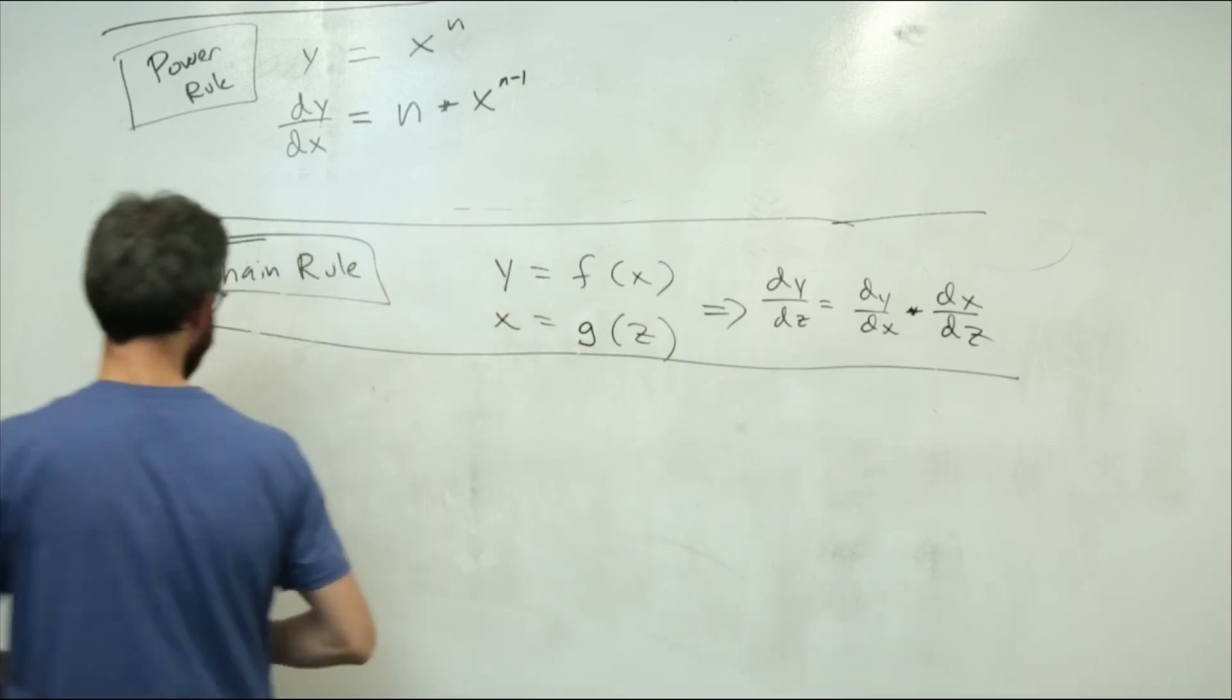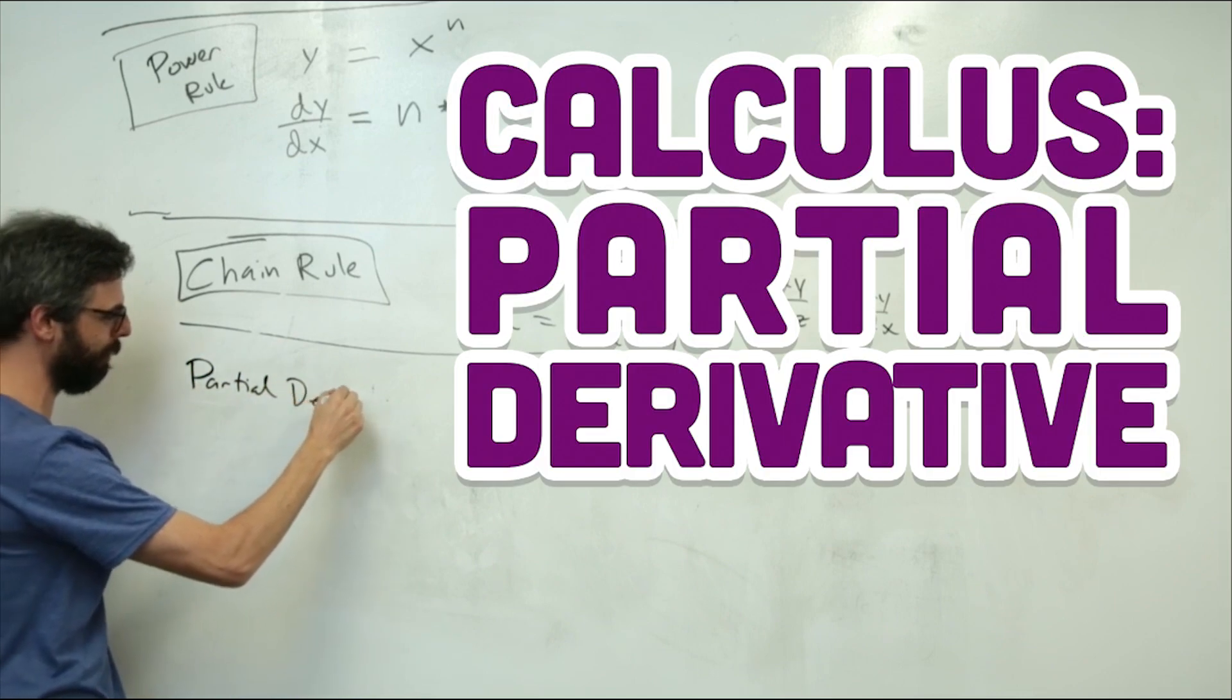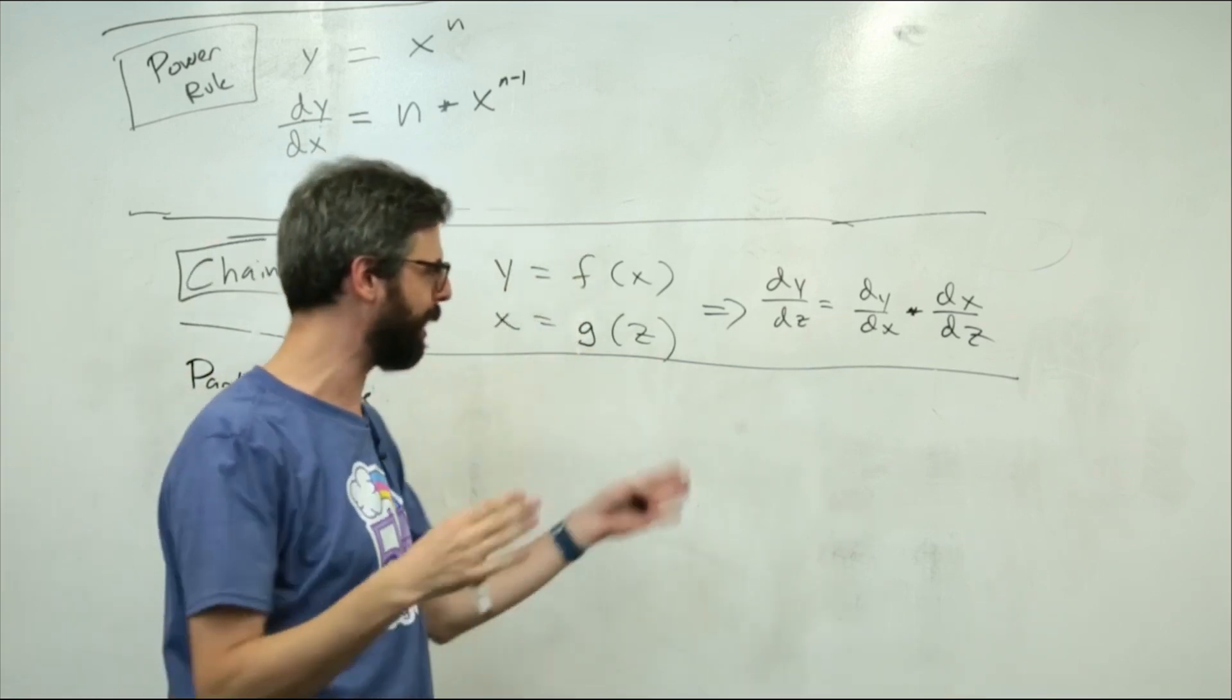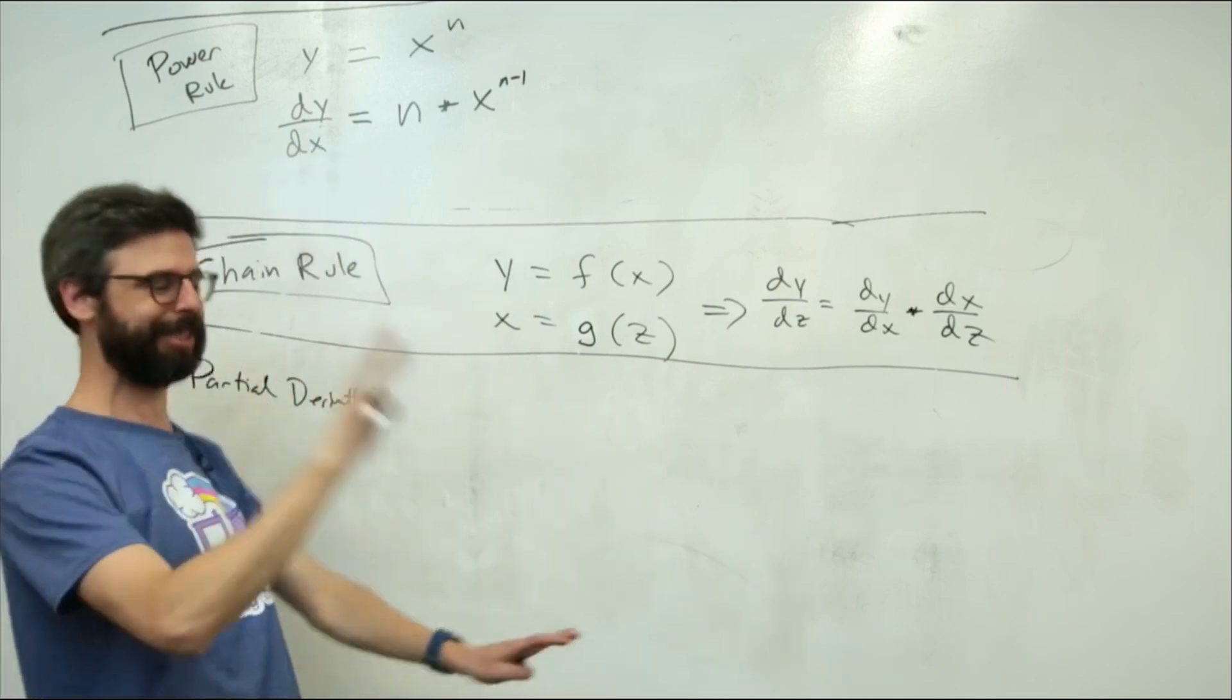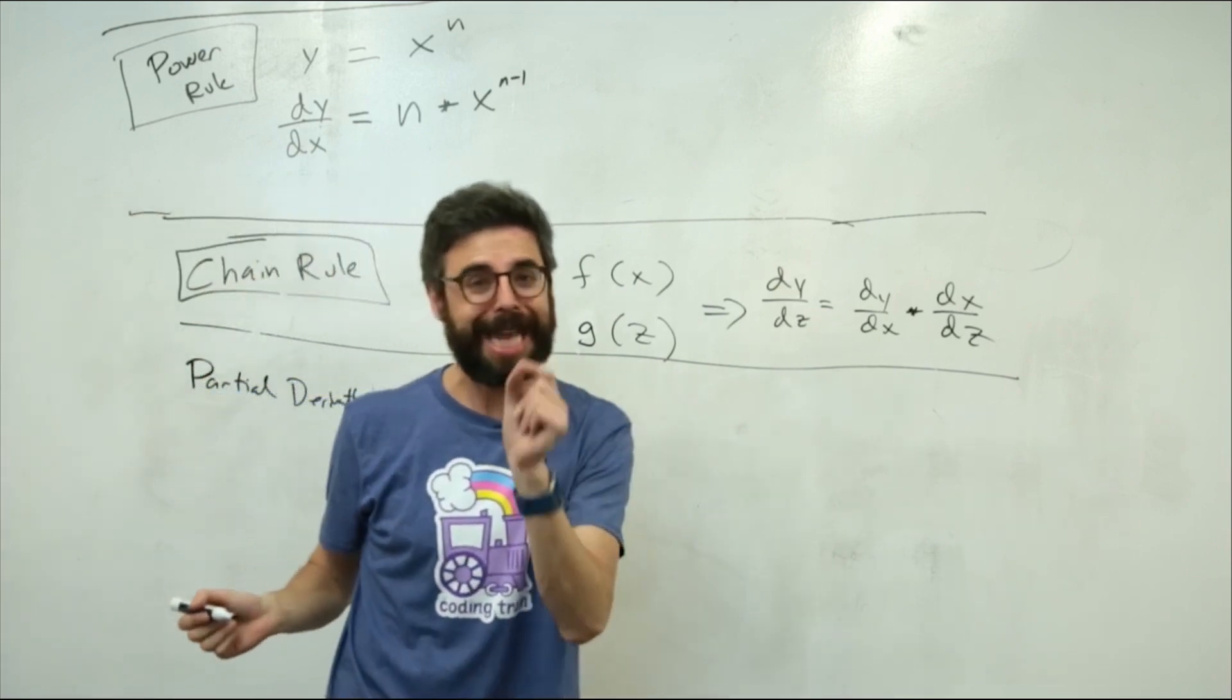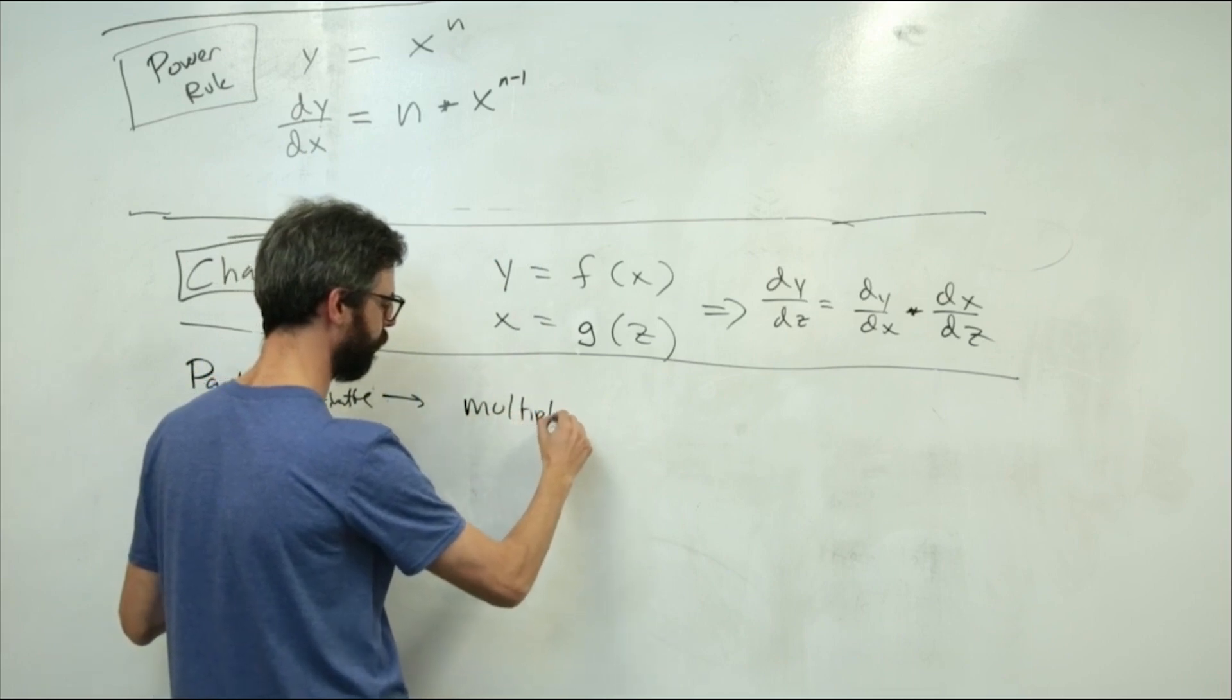The last piece that I need for the gradient descent algorithm is something called a partial derivative. I think this is actually going to be somewhat easier to explain, and then hopefully it'll all make sense when we come back and look at the derivation of the linear regression with gradient descent formula.